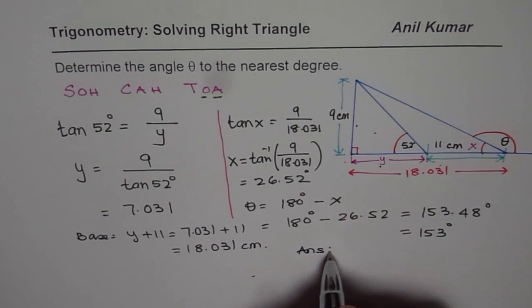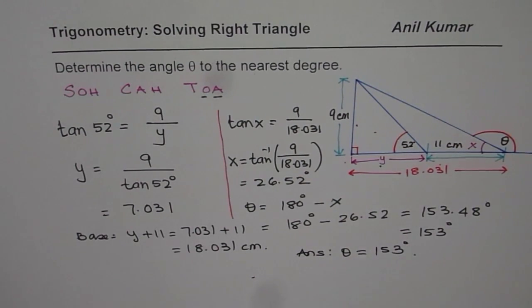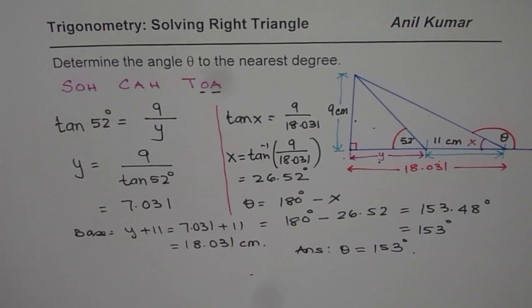Therefore, the answer is theta equals to 153 degrees. So that is how it should be solved. I hope the steps are clear. Go through them once again. Try to understand when which ratio should be used to solve a question like this. I hope that helps. Thank you.